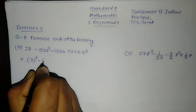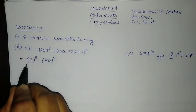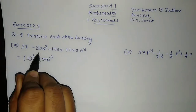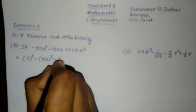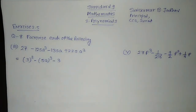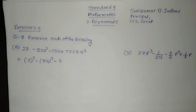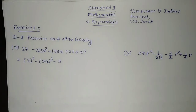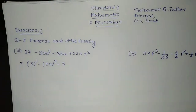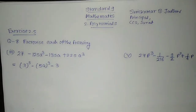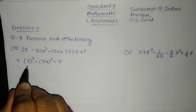Minus 125a cube is a cube of 5a, so we write it as 5a whole cube. 3 cube is equal to 27, 5 cube is equal to 125, and it is a cube. If we write it in this format, you know the formula: x cube minus y cube minus 3 into xy into bracket x plus y. We will try to write it in that format. If it is possible, then we can write it as x minus y whole cube. So this is the first term.